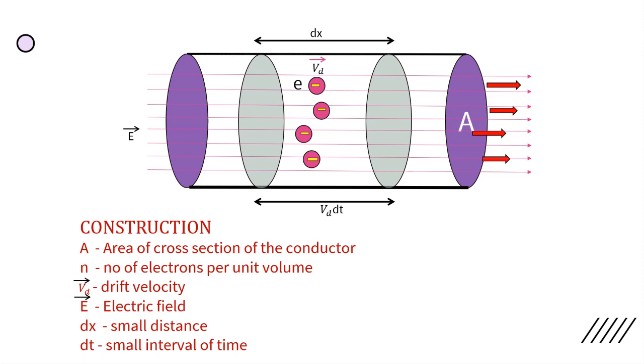Now the construction. A is the area of cross-section of the conductor. N is the number of electrons per unit volume. Vd is the drift velocity. E is the electric field. dx is a small distance. dt is a small interval of time.